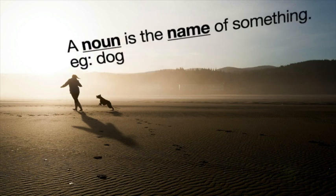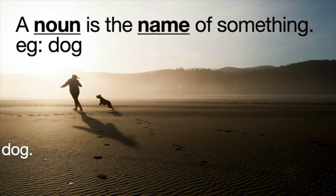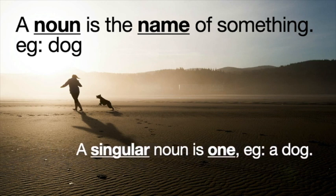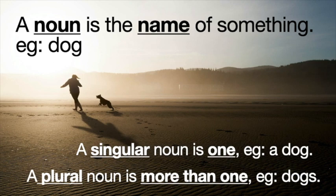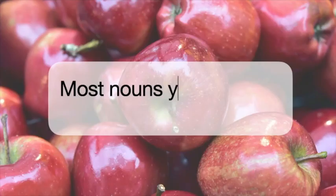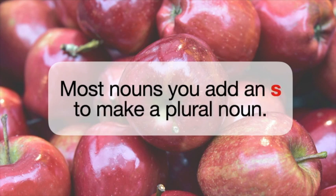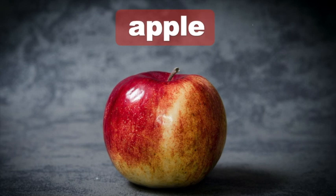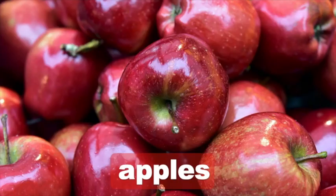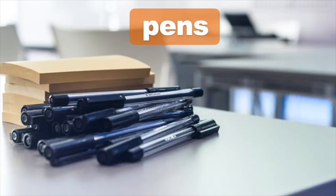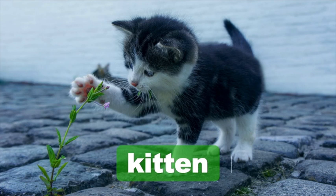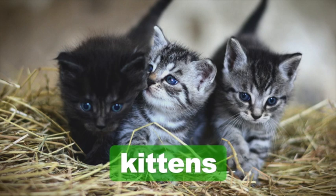A noun is the name of something. Example: dog. A singular noun is one — a dog. A plural noun is more than one — dogs. Most nouns, you add -s to make a plural noun. Apple, add -s: apples. Pen, add -s: pens. Kitten: kittens.